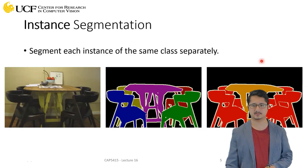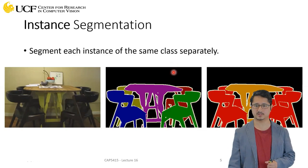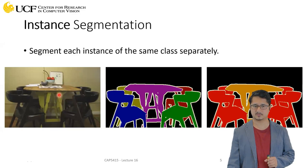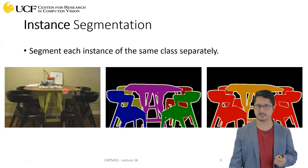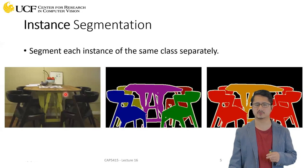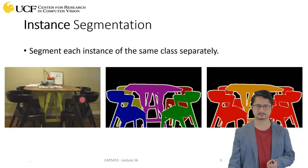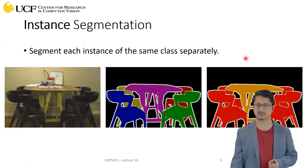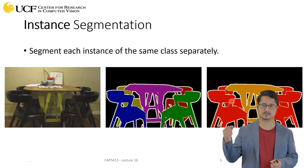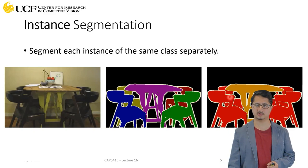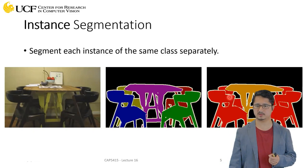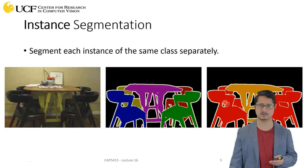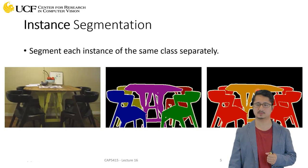Instance segmentation is different from semantic segmentation, which was the topic of the last lecture. In semantic segmentation, for each pixel you say which semantic category or object category that pixel belongs to — whether it's a table, a wall, or a chair. The output marks all pixels belonging to, say, chair in red, and pixels belonging to table in orange.